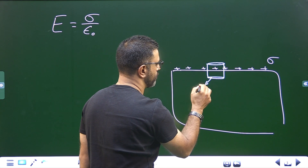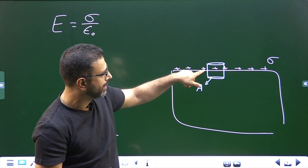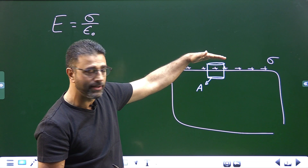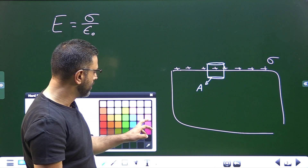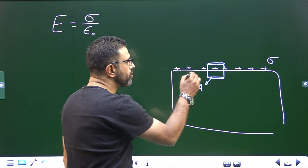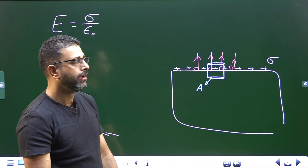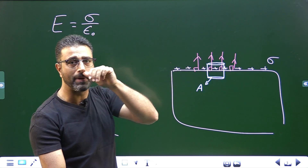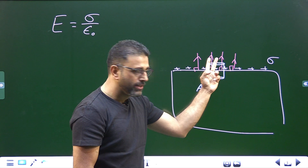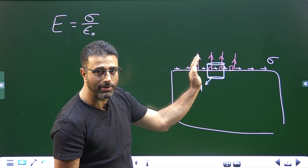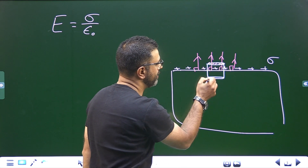Consider a cylindrical Gaussian surface with base area A, where the top of the cylinder is very close to the metallic surface. The electric field due to a metallic surface is always perpendicular to the surface. Therefore, there is no flux through the curved sides of the cylinder, and no field inside the metal — so flux passes only through the top surface of area A.